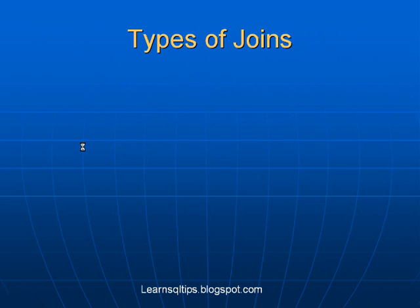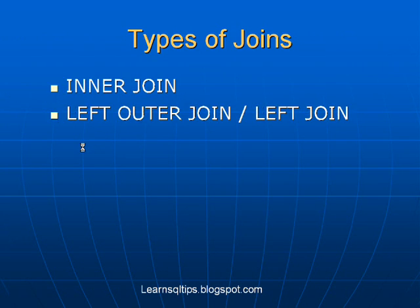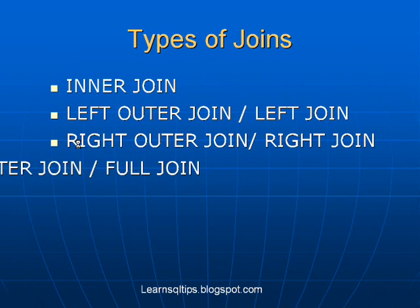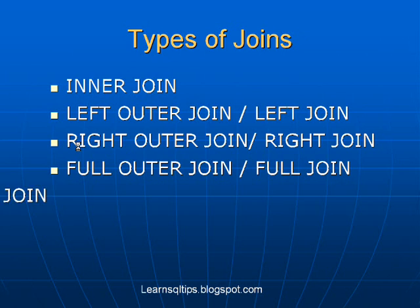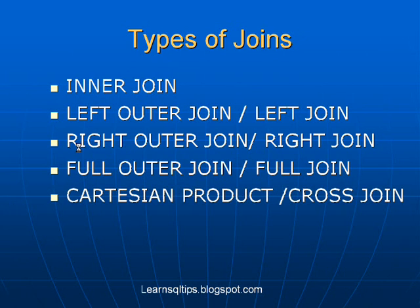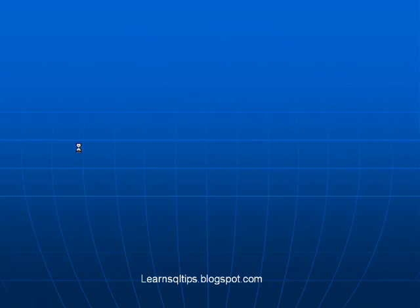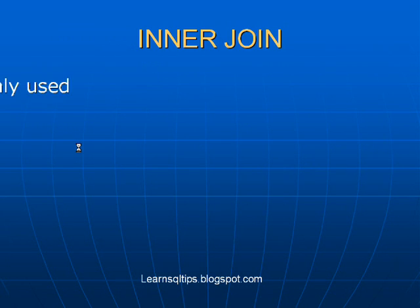There are six types of joins in SQL: inner join, left join or left outer join, right join or right outer join, full outer join or full join, Cartesian product or cross join, and finally self join. We'll discuss each of these joins.